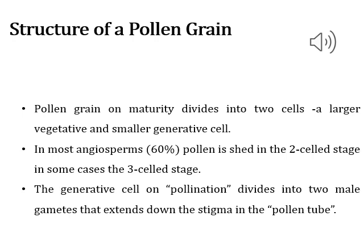On maturity, the pollen grain divides into two cells: a larger vegetative cell and a smaller generative cell. In angiosperms, around 60 percent of plants shed their pollen at the two-celled stage or three-celled stage. Due to environmental changes, the generative cell divides into two male gametes during pollination, and they are liberated into the pollen tube.